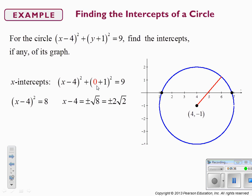Taking the square root of both sides gives x minus 4 equals plus or minus the square root of 8, because when you take the square root of both sides you have to account for both the positive and negative answer. The square root of 8 simplifies to plus or minus 2 root 2. So then x minus 4 equals plus or minus 2 root 2, and adding 4 to both sides gives x-intercepts at 4 plus 2 root 2 and 4 minus 2 root 2.